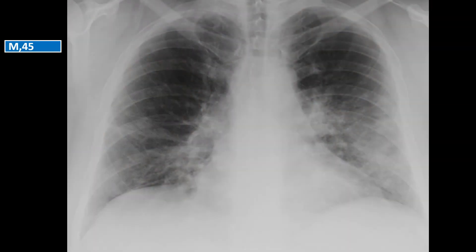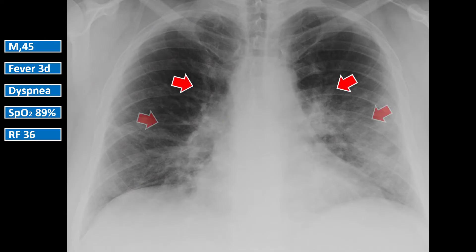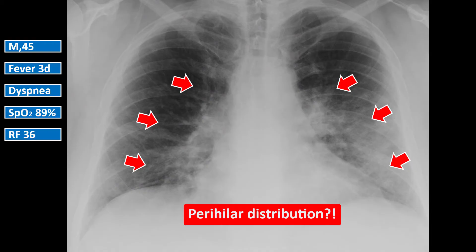What would you say this is? A 45-year-old man, three days of fever, now shortness of breath, with O2 saturation of 89% at rest and a respiratory rate of 36 breaths per minute. Is it bacterial? Well, certainly possible, and this patient does need to be treated with antibiotics — but is this enough? The x-ray shows bilateral infiltrates, interstitial but also with consolidation. This symmetry is a little unusual for bacterial pneumonia, but it doesn't really fit COVID either.